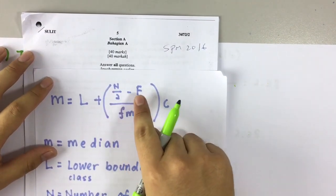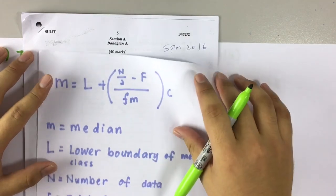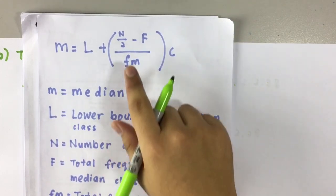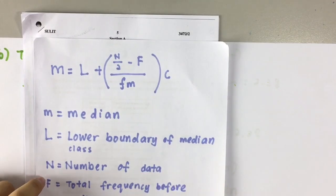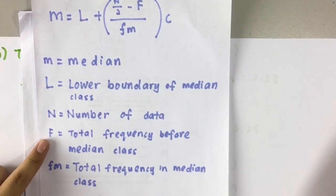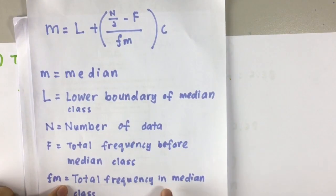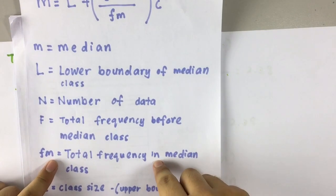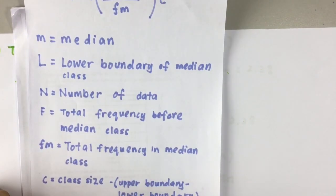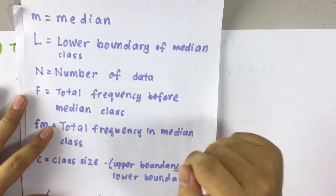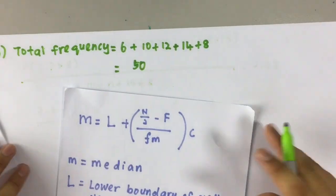So m equals to L plus (n divided by 2 minus f) divided by fm times c. m refers to median. L refers to lower boundary of median class. n divided by 2 is number of data which is total frequency. f is total frequency before the median class. Take note, before for f. fm is total frequency in median class. Take note, in. Before and in. Times c, class size. Upper boundary minus lower boundary. Then we can substitute every value in this formula.